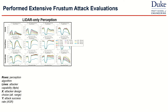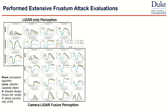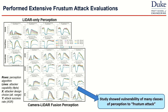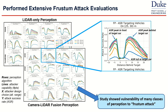We performed extensive analysis of the frustum attack, evaluating it on LiDAR-only perception and on camera-LiDAR fusion perception, showing that many classes of perception are vulnerable. Specifically, the x-axis represents where we put spoof points relative to the target car, the y-axis represents the attack success rate, and each line represents the number of attack points injected. There is a clear attack success rate peak both in front of and behind the car, which makes intuitive sense.